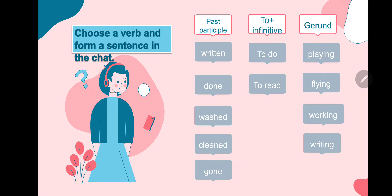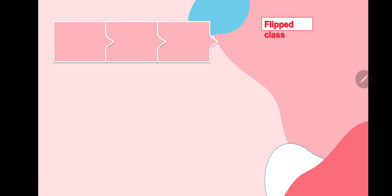For example: She has written her homework — she finished it. I want to do the laundry. I want to go. Or: I enjoy playing football.